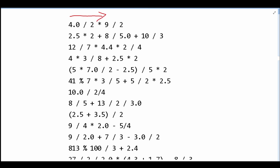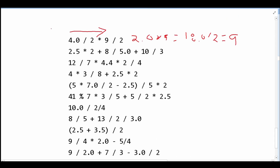In our first equation, we have 4 divided by 2, and that is going to give us 2.0 times 9, which equals 18.0. Then we need to divide this by 2, which gives us 9. Since it is being divided by 18.0 and there's a decimal, this is actually going to be 9.0, so it's a double.